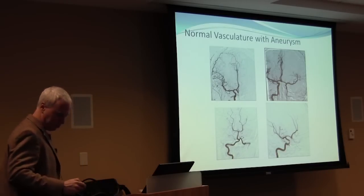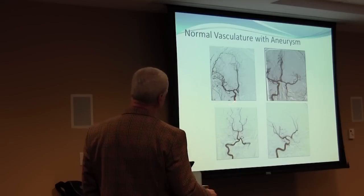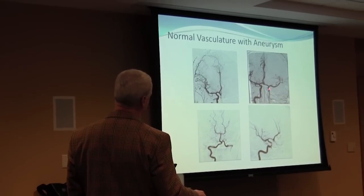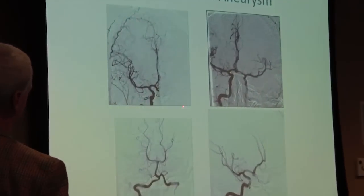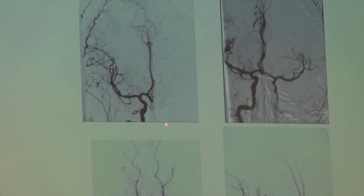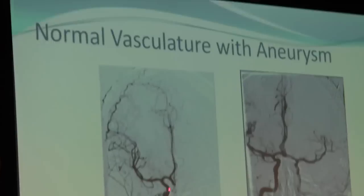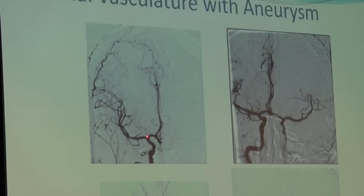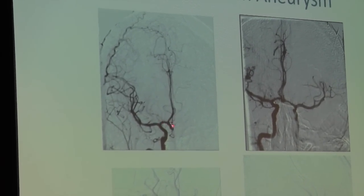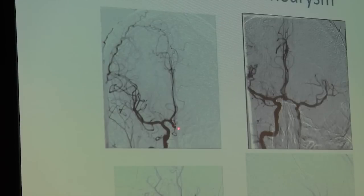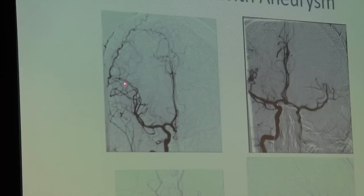Here's the normal vasculature of the brain. This is the right side, the left side, because we're looking at the person — the eyeball would be here on the right, left eyeball would be right here. Dye is injected up the internal carotid artery, comes up into the brain, and it branches into the middle cerebral artery, the anterior cerebral artery, and then they keep branching and branching.